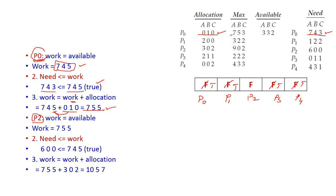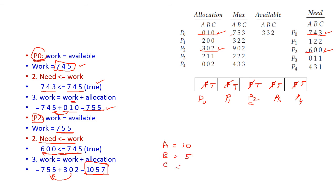Now we come back to P2. Current available resource is [7, 5, 5]. The need for P2 is [6, 0, 0]. Since 6 is less than 7, we can easily allocate 6 from this available. P2 completes its execution and releases its resources. After P2's resources are released and added back, we now have all the resources: type A = 10, type B = 5, type C = 7.